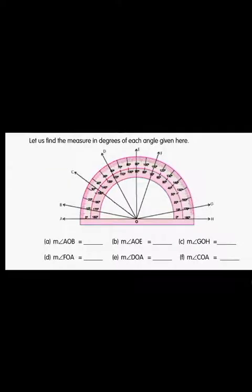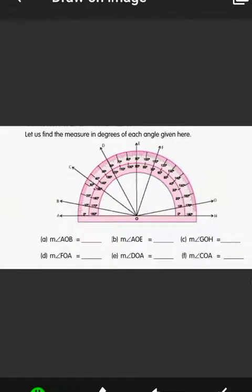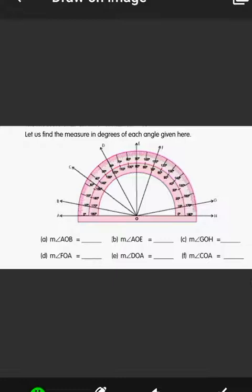Now let's find the measure in degrees of each angle given. First, you need to measure angle AOB. You can see here 0 lies on the bottom line, O is in the center, and A also lies on the bottom line. We will use the outer scale here. The line OB lies on 10 degrees. So the measure of angle AOB is 10 degrees.